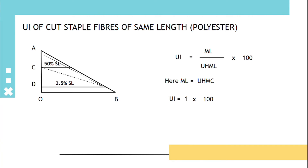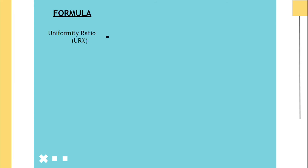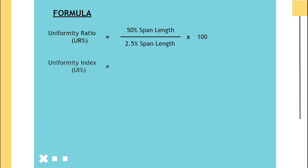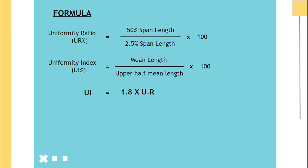Uniformity ratio equals 50% span length divided by 2.5% span length, multiplied by 100. Uniformity index equals mean length divided by upper half mean length, multiplied by 100. To convert from ratio to index or index to ratio, the conversion is: uniformity index = 1.8 × uniformity ratio.